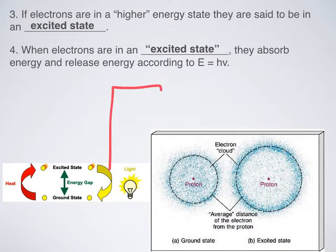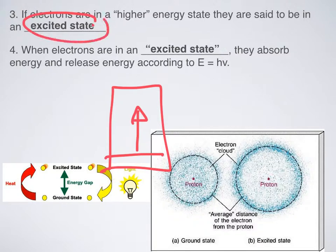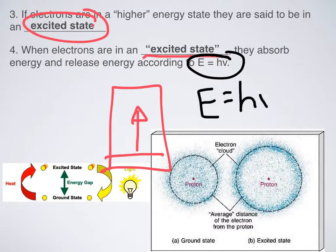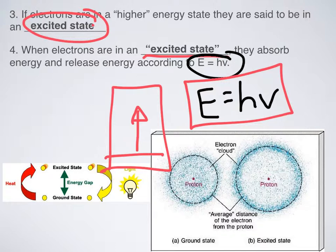So what do we call it when in our hotel we move from the ground floor up to another floor? Well, that's called an excited state. And if electrons are in a higher energy state than the ground state, they're said to be in an excited state. When electrons are in their excited state, they absorb and release energy according to good old E equals H times V. So that formula, again, that keeps showing up in this unit, this is a way of representing how much energy there would be in an electron in its excited state.